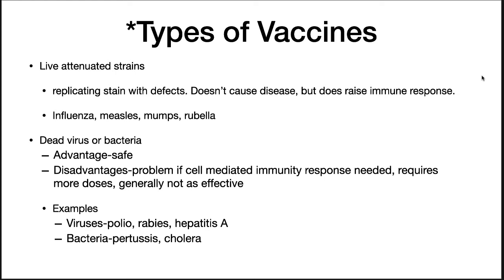A dead virus or bacteria can also be used. The advantage is it's safer and you don't have to worry about the microorganism or virus changing and becoming more virulent. The disadvantage is that if cell-mediated immunity is needed for the response, you require more doses and they're generally not as effective. Examples include polio, rabies, hepatitis A, some influenza viruses, pertussis, and cholera.